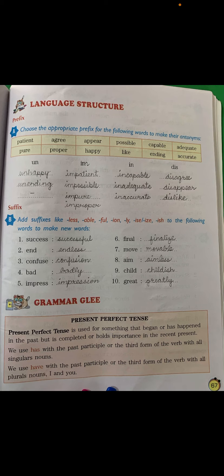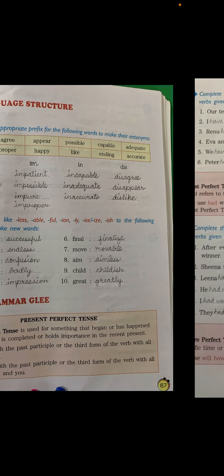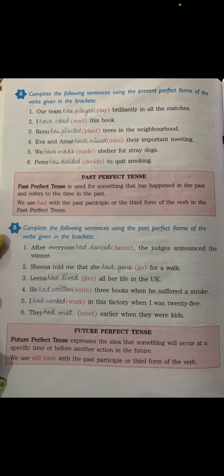'Has' is used with singular nouns, and 'have' is used with plural nouns, 'I', and 'you'. With 'have' we use the past participle or third form of the verb. So: singular noun → has + third form; plural noun / I / you → have + third form. This rule applies in both cases.